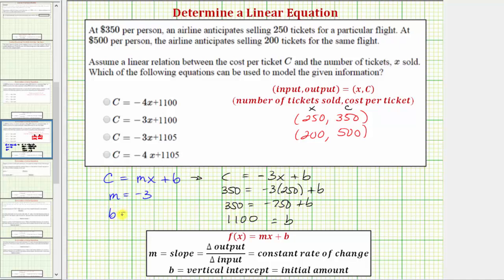Now that we know B is equal to 1,100, we now know the equation for our function. Our equation is C equals negative three X plus 1,100. Looking at our choices, the correct answer is the second option. I hope you found this helpful.